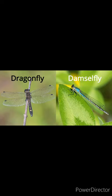Our second point is body shape. This picture shows the body of both the dragonfly and the damselfly side by side. The body of the dragonfly is bulky with a short and thick appearance. On the other hand, the body of the damselfly is slender with a long and thin appearance.